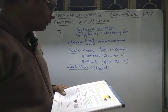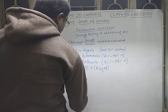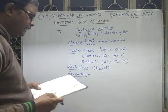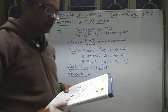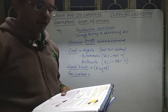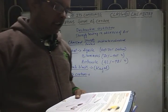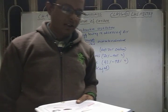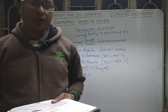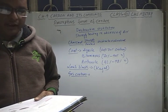Gas carbon is another amorphous form of carbon. It is a black powder that gets deposited when hydrocarbons are heated in the absence of air. It is also produced during the destructive distillation of coal. Gas carbon is a good conductor of electricity and is therefore used in the manufacturing of electrodes.